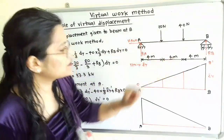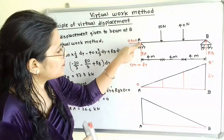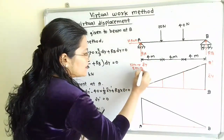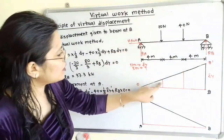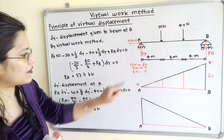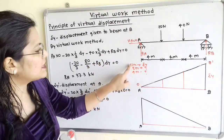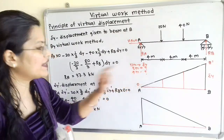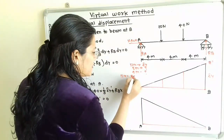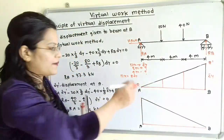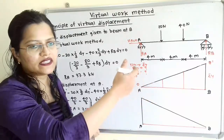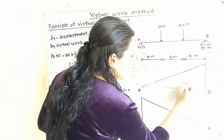The 40 N force is placed at 4 plus 4 = 8 meters from end A (since displacement at A is 0). For a distance of 8 meters, the displacement is unknown. Using similar triangles: 12X = 8 delta Y, so X = 8/12 delta Y, which simplifies to 2/3 delta Y. For 20 N at a distance of 4 meters: 12X = 4 delta Y, so X = 4/12 delta Y, which simplifies to 1/3 delta Y. These are the displacements at the 20 N and 40 N force locations.